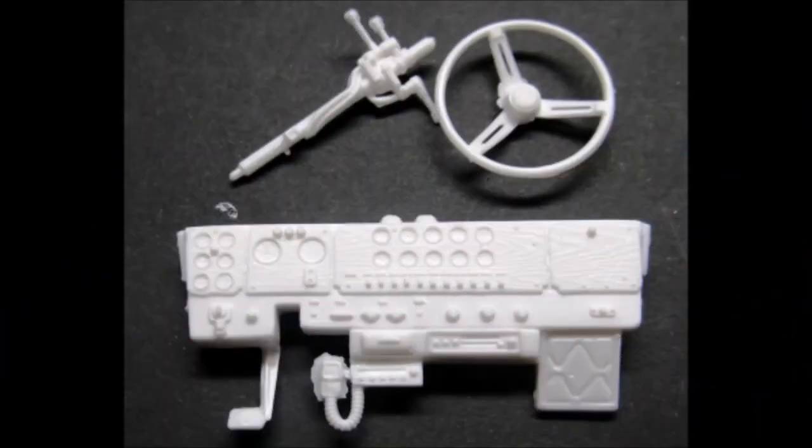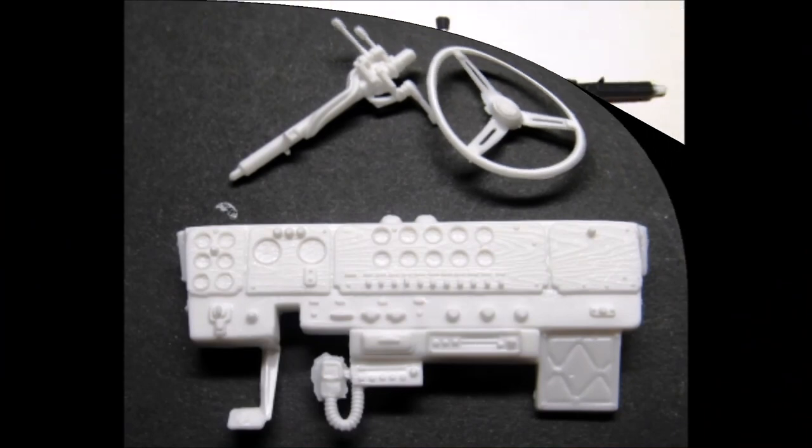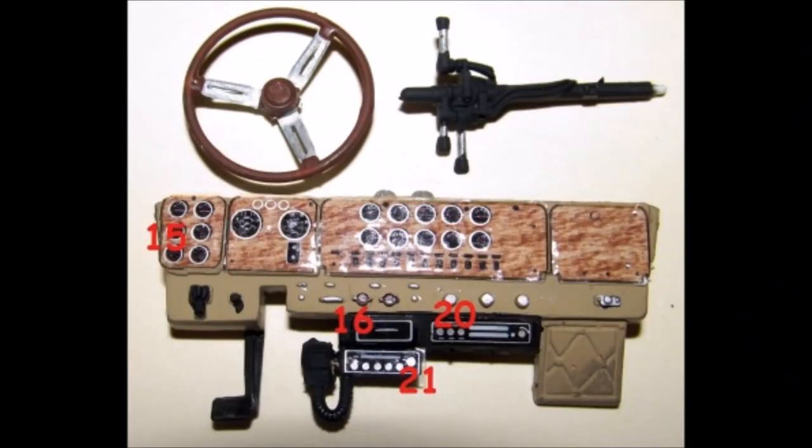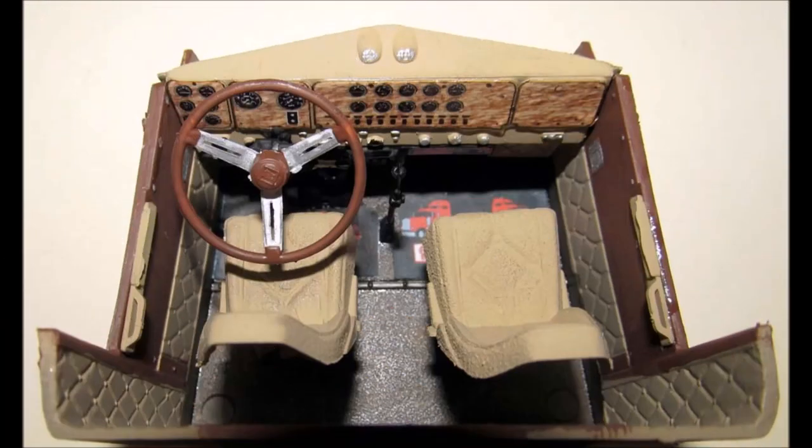Most of the dashboard features come from decals. I did the dash with a tan color with some detail painting. Then I added decals 15, 16, 20, and 21. The column is flat black and the wheel is brown and aluminum. Add the wheel to the column and insert that into place into the interior tub location. Then add the dash to the interior tub.